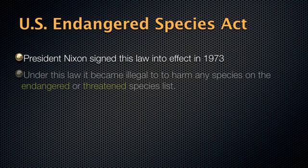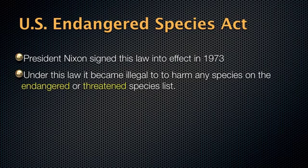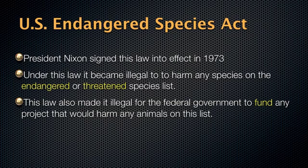Under this law, it became illegal to harm any species on the endangered or threatened species list. Threatened comes first — that's when numbers are going down rapidly. Endangered means it's possible that extinction is coming. And if all members die, the species is extinct. This law also made it illegal for the federal government to fund any project that would harm any animals on this list.